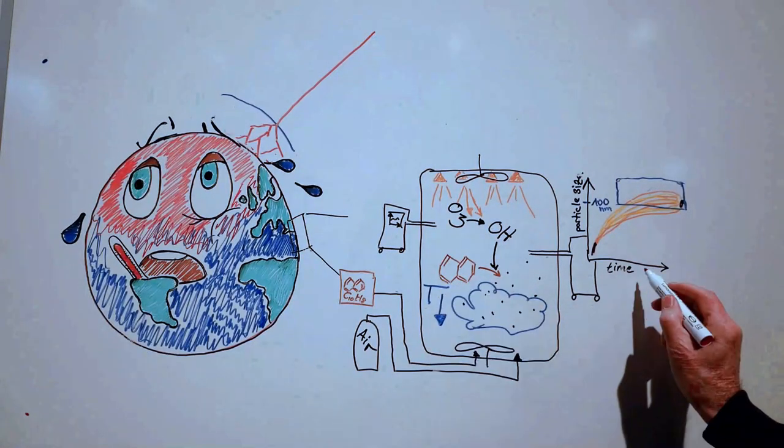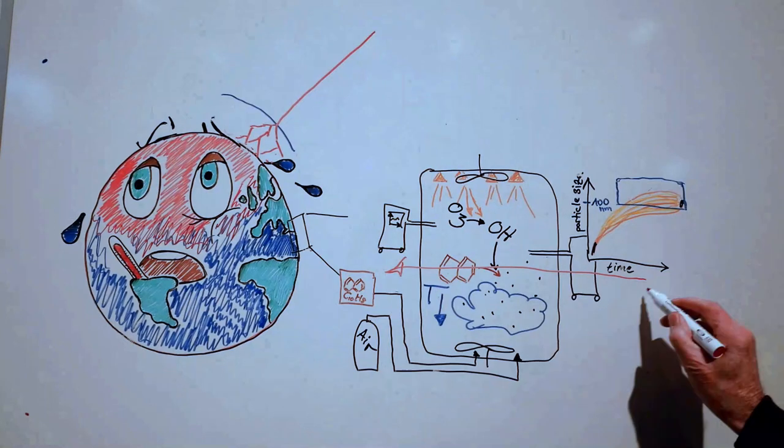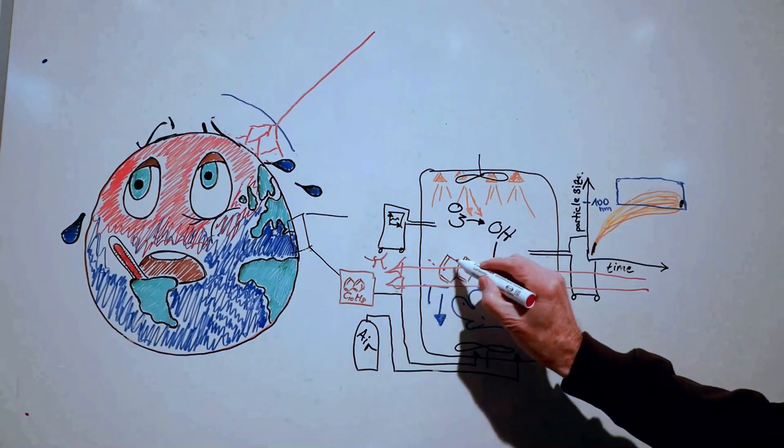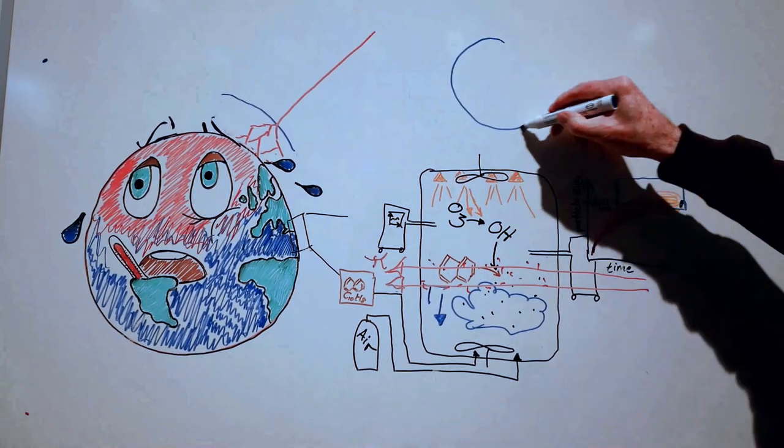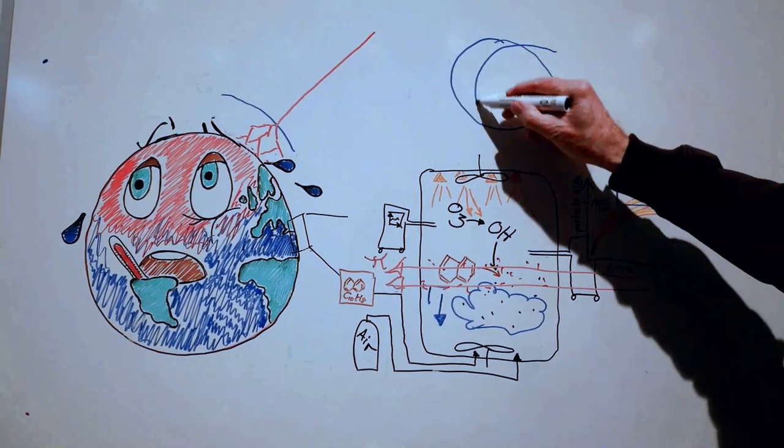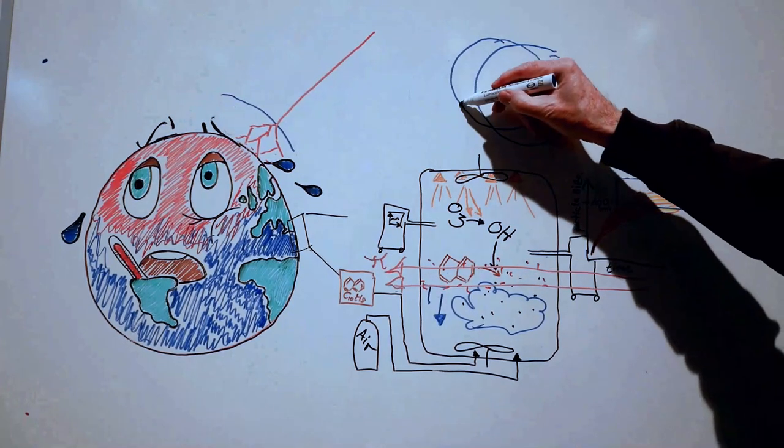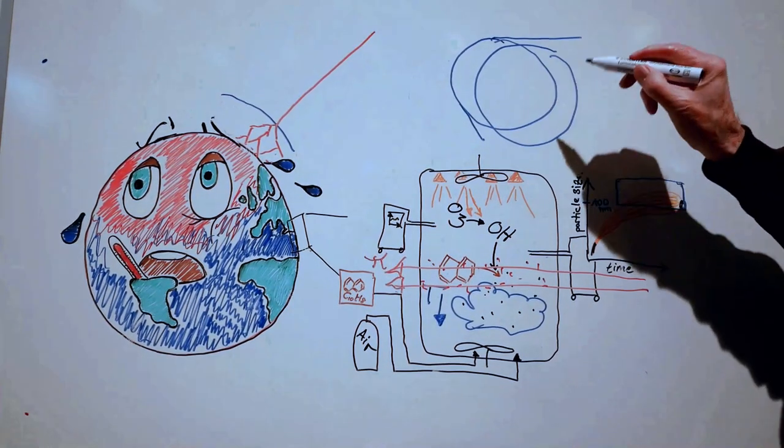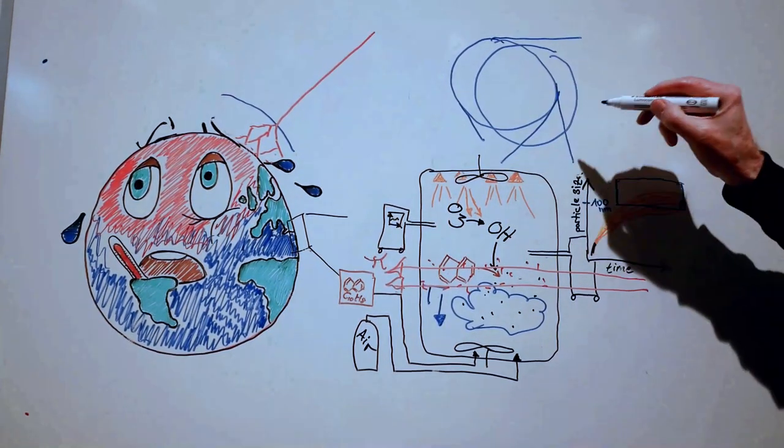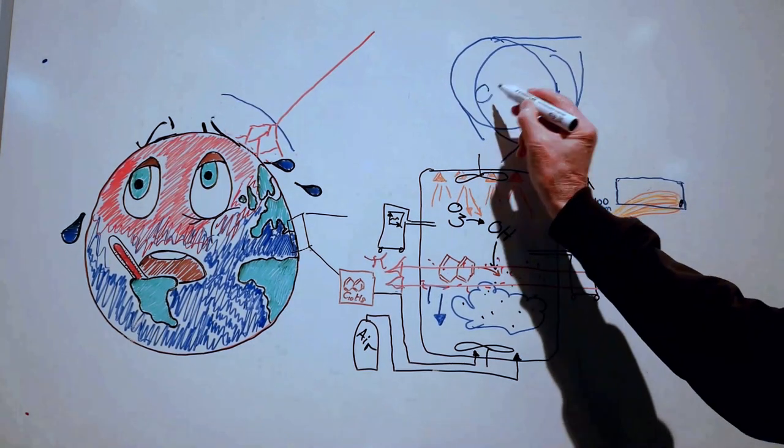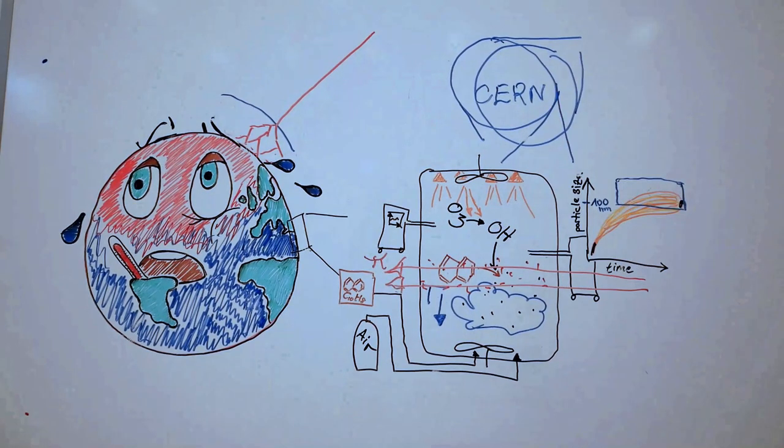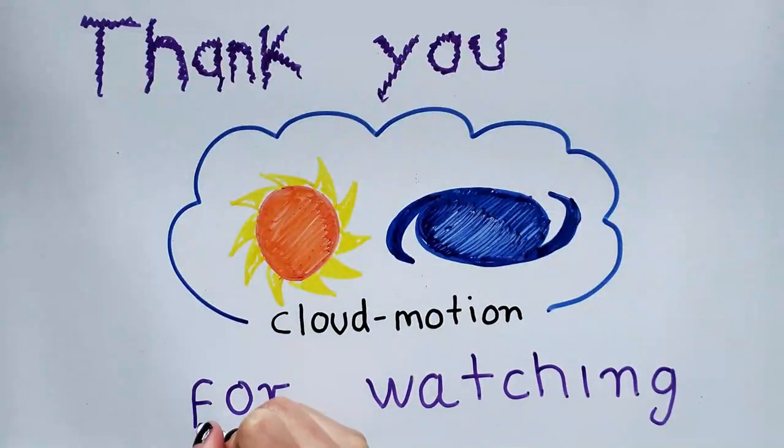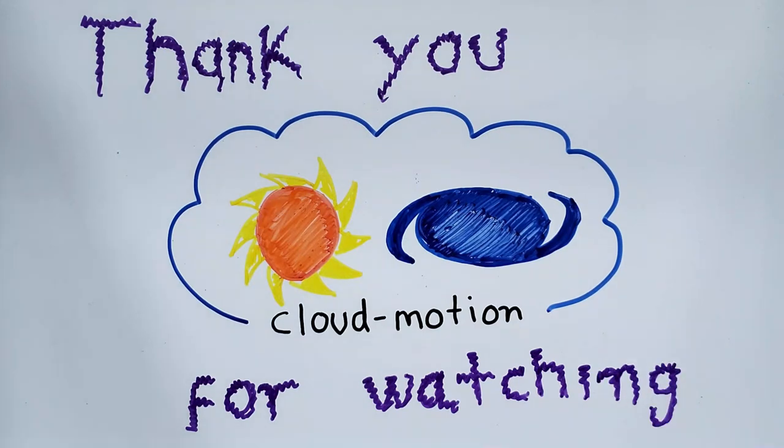Several studies have suggested that galactic cosmic rays, which are high-energy particles that continually rain down on our atmosphere from space, can influence the formation of particles, and in turn, clouds. At the cloud experiment, we use a pion beam from the CERN proton synchrotron to simulate cosmic rays. This allows us to study the effect that cosmic rays have on the chemistry and physics of our atmosphere, and possibly on clouds and climate. Thank you for watching, from everyone at cloud.